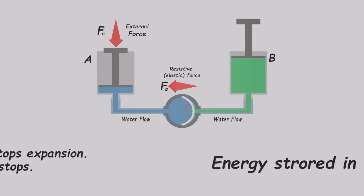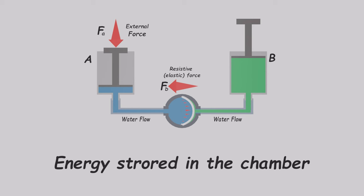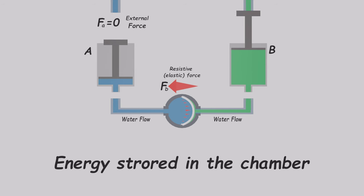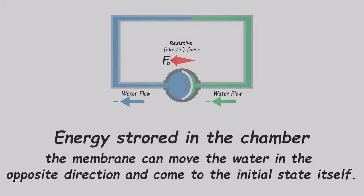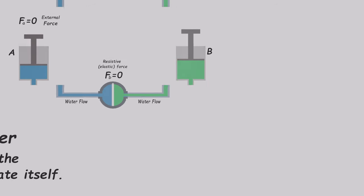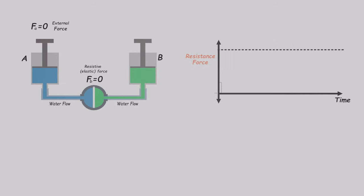Now that we've stored some energy in the membrane, if we disconnect the pistons and connect the two ends of the chamber, the membrane can move the water in the opposite direction and return to its initial state on its own. Initially we store energy in the device, and then we can use the stored energy to do useful work.